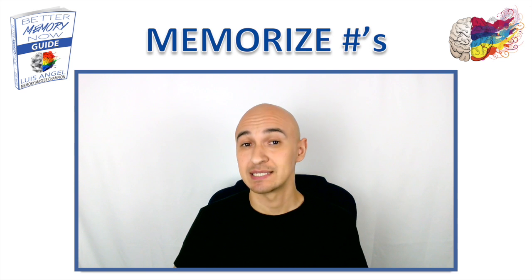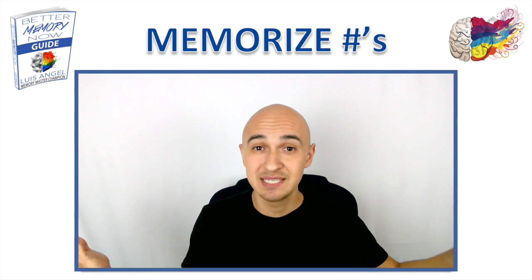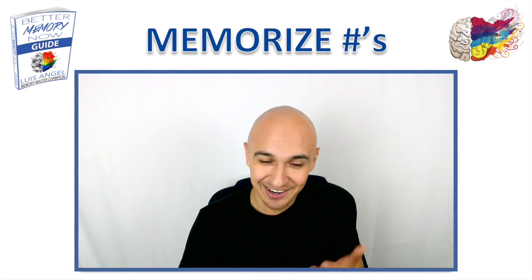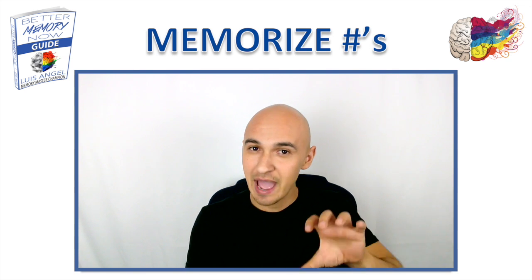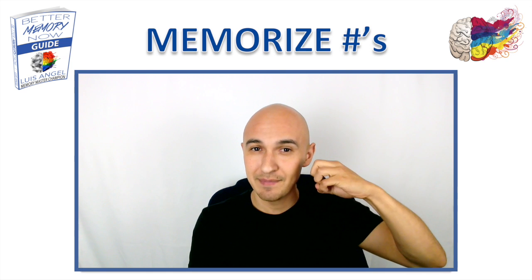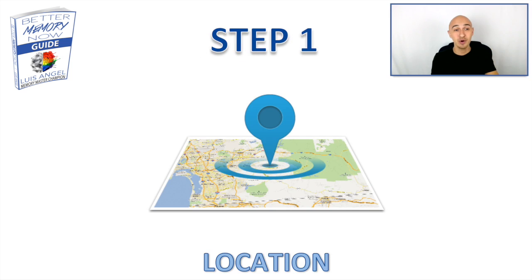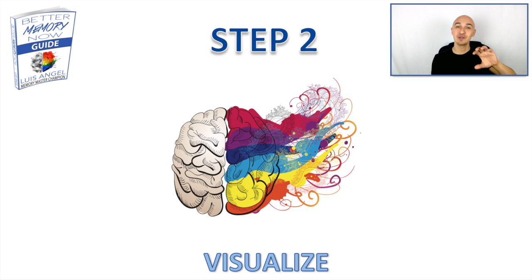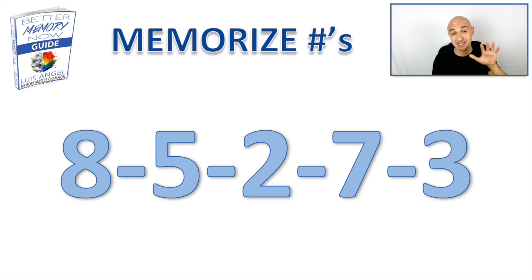Let's actually memorize a random sequence of numbers, because what's the point of having these images if you don't actually use them? This will help cement these numbers and images into our long-term memory. Step one is we need a location — bring up the home locations we created. We want to visualize the pictures for the numbers along that route using our first room to memorize this sequence of five numbers: eight, five, two, seven, three.